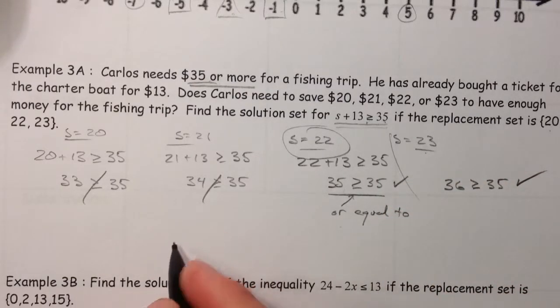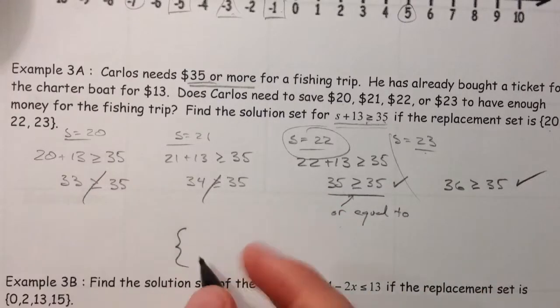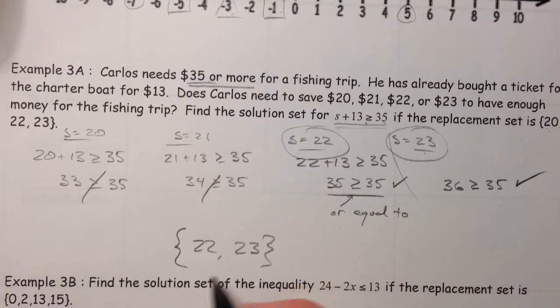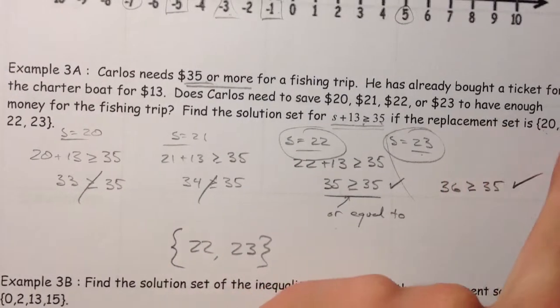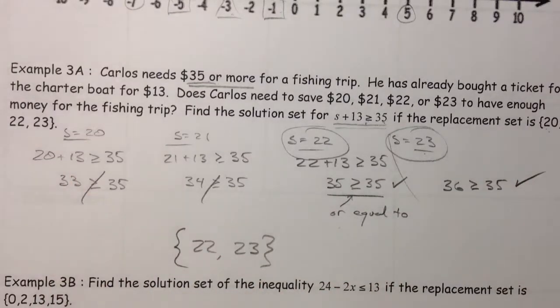And so, the solution set, as far as pertaining to our replacement set, is 22 and 23. Now, you say, well, he could also save 24, 25, 26. Yes. But, our replacement set was limited to 20, 21, 22, and 23. So, we're going to leave it at that.